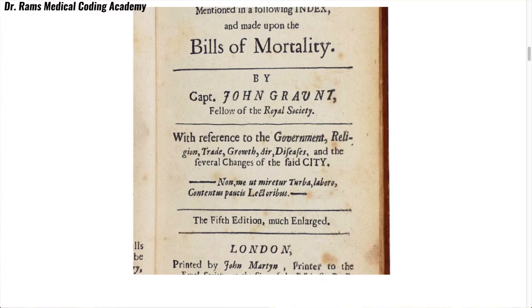Coming to medical coding, it was John Graunt who was a pioneer — the person who instituted this system of recording patients. Medical coding as a system evolved in England. It was the London Bills of Mortality — the first ever recorded classification of medical coding. This was done especially to calculate and account for deaths of children below the age of six. Here is a picture — this reference manual stands as the first ever record of medical coding, and the person who instituted it was John Graunt.